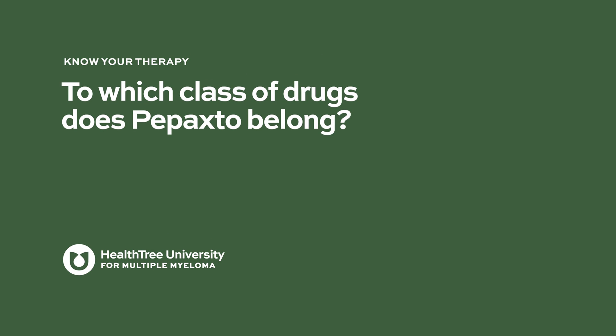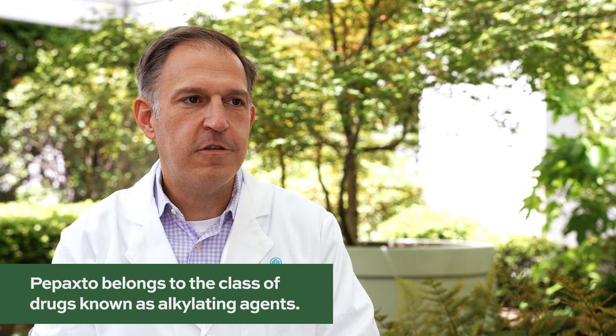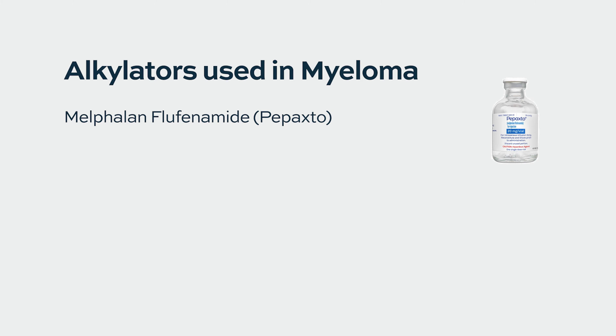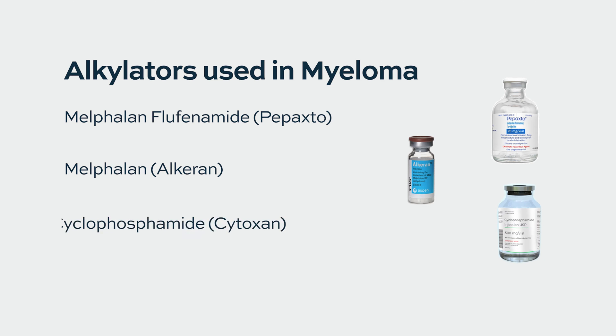To which class of drugs does Pepaxto belong? Melphalanflufenamide, as you can perhaps understand from the name, actually belongs to a class of chemotherapeutic agents called alkylators. Other alkylators used in multiple myeloma include melphalan, commonly used in high doses as part of autologous stem cell transplant, as well as cyclophosphamide, which is an alkylating agent as well.